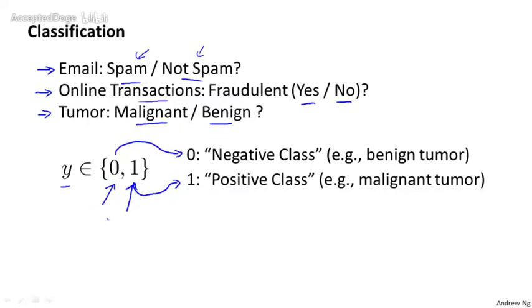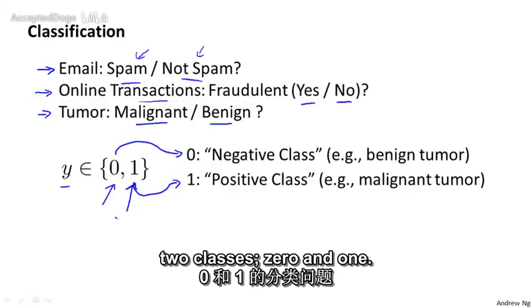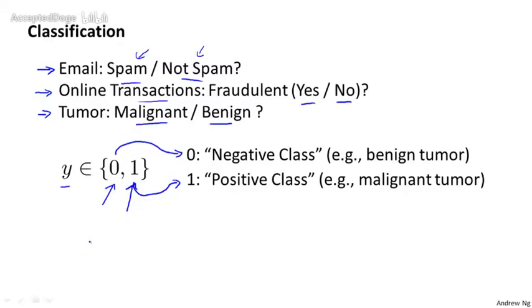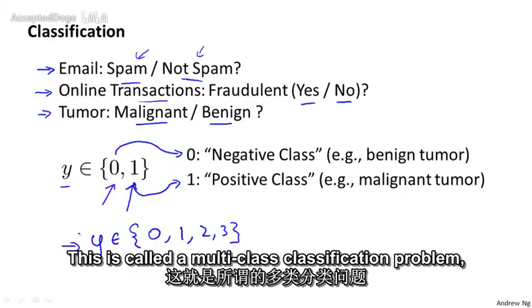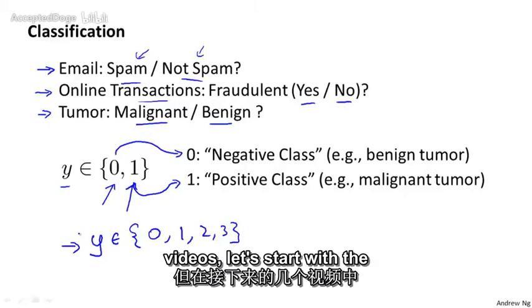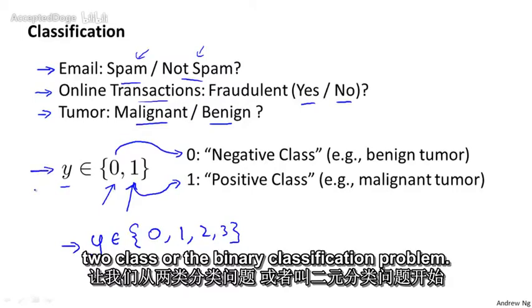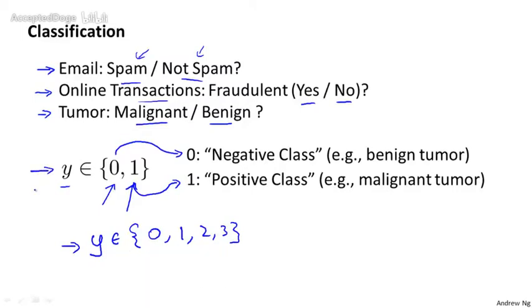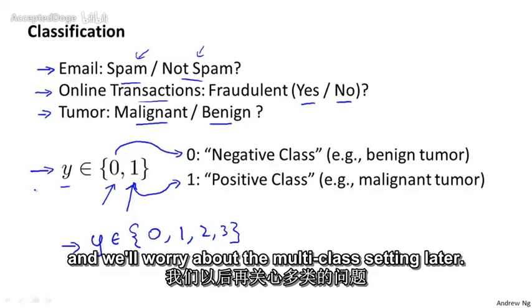For now, we're going to start with classification problems with just two classes, 0 and 1. Later on, we'll talk about multi-class problems as well, where the variable y may take on, say, four values 0, 1, 2, and 3. This is called a multi-class classification problem. But for the next few videos, let's start with the two-class or the binary classification problem and we'll worry about the multi-class setting later.